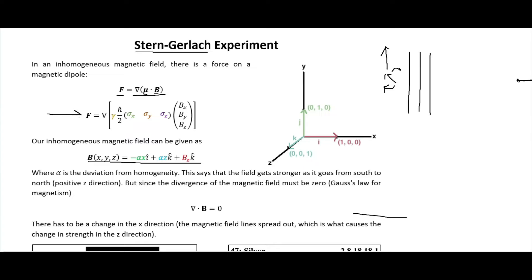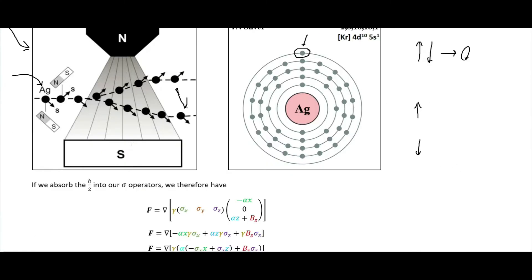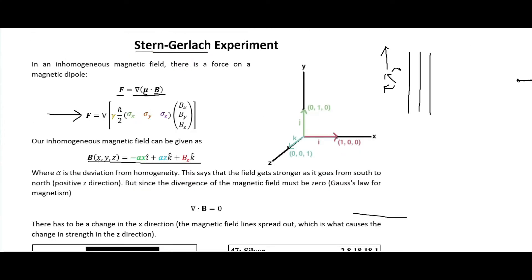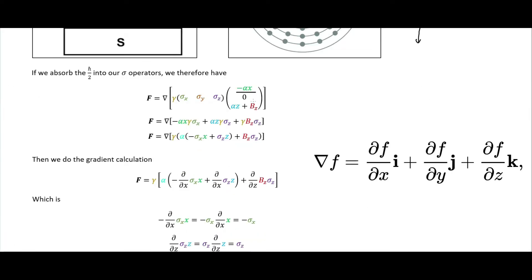Now looking at the gradient of the dot product of the magnetic dipole and the magnetic field explicitly: for the x-component we have negative alpha times x, which comes directly from the field expression. The y-component is zero since we are not considering y. For z we have positive alpha times z plus B_z. We perform the dot product — the x term multiplies through, the y term gives zero, and the z term multiplies by both contributions — giving us expressions involving the sigma_z and sigma_x Pauli matrices.